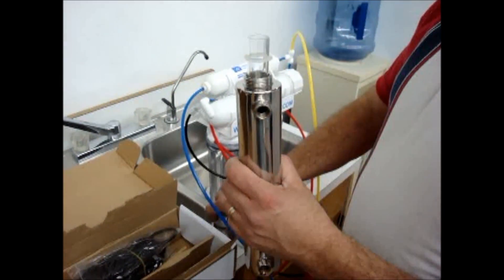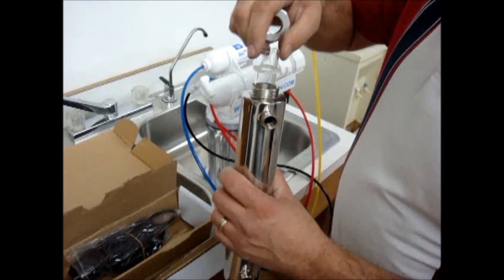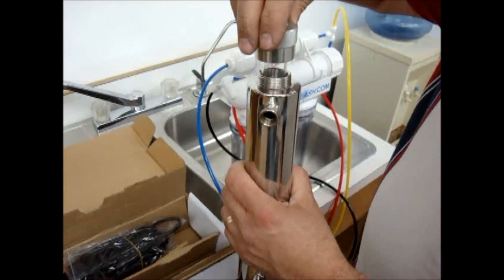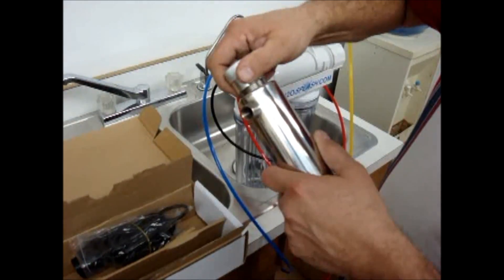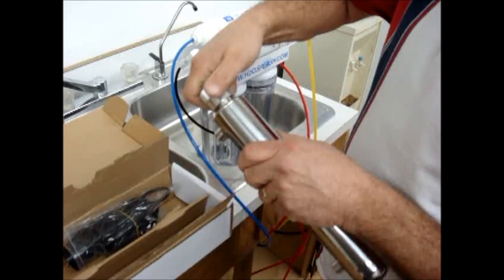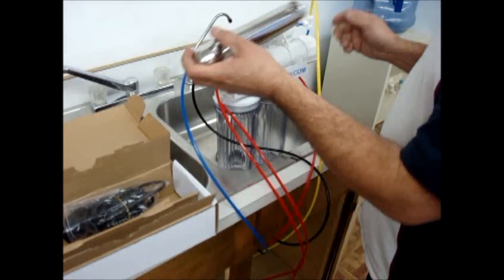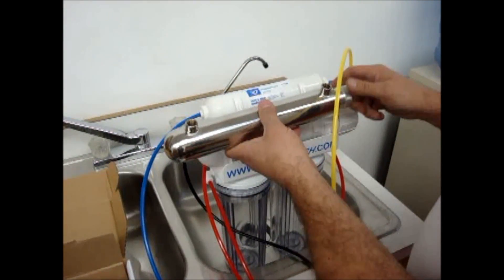You'll notice as you get down towards the bottom there's a spring. Try to keep it onto that spring. Find your aluminum nut and thread it onto the tube.